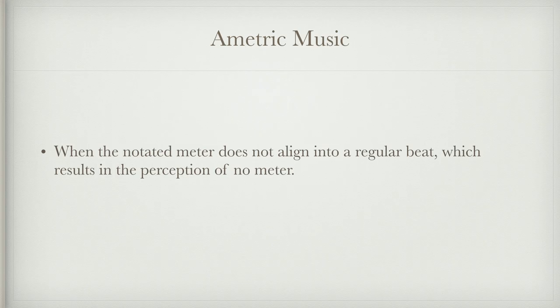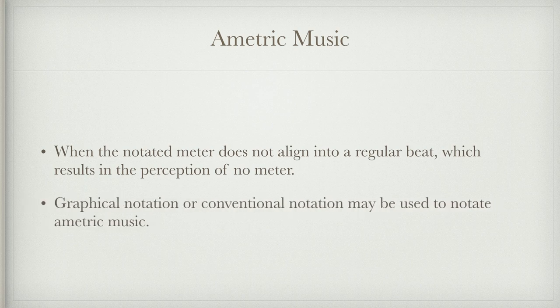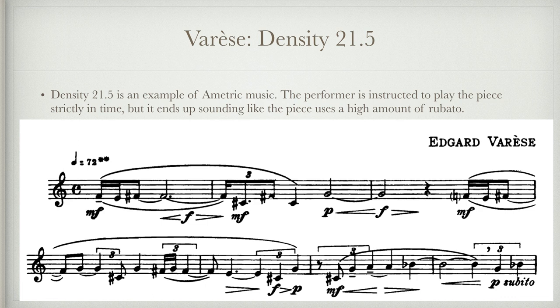The next topic is ametric music — when the notated meter does not align into a regular beat at all, resulting in the perception of no meter. It can be notated with graphical or conventional notation. In this example, the performer is instructed to play strictly in time, yet it sounds like the piece uses a high degree of rubato. It's hard to identify the time signature even though it's played strictly, because the beat is obscured through syncopation and the downbeat is delayed in nearly every measure.